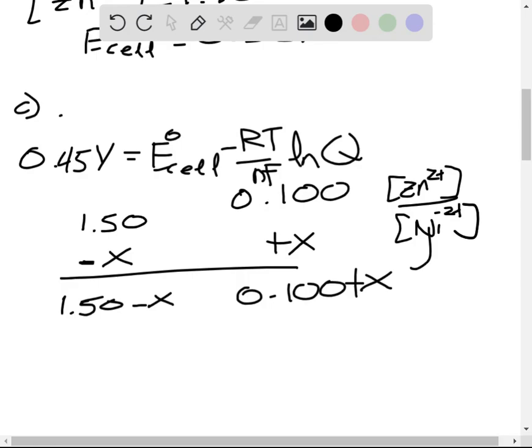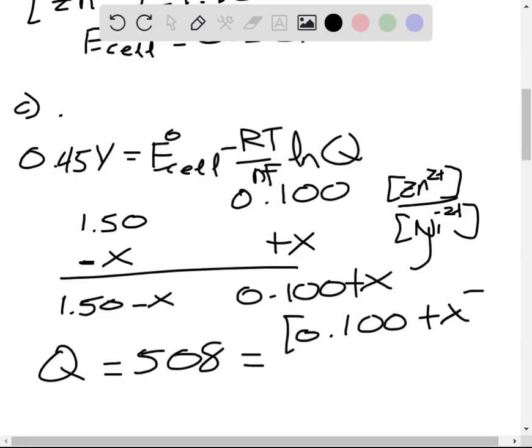So 0.45 minus 0.53. Then we have our RT over nF factor. And we can exponentiate. And now we find that our reaction quotient is equivalent to 508. So this is equivalent to 0.100 plus X over 1.50 minus X. So now we can substitute and solve.